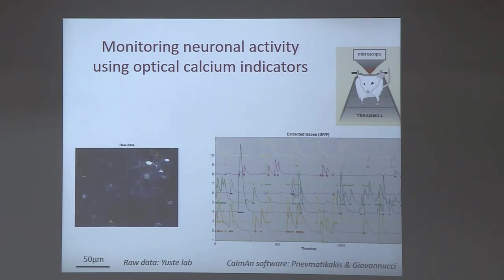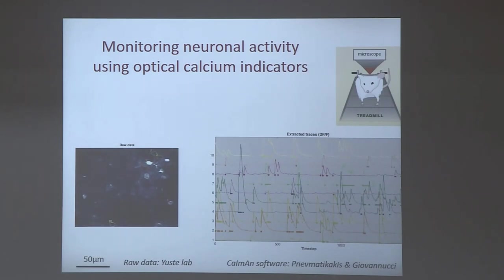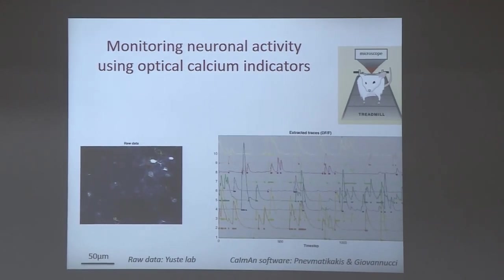Two points to remember from this diagram: neuronal activity is sparse at any given time — only a small fraction of neurons is active — and neuronal activity doesn't change sign, so we take it as non-negative.